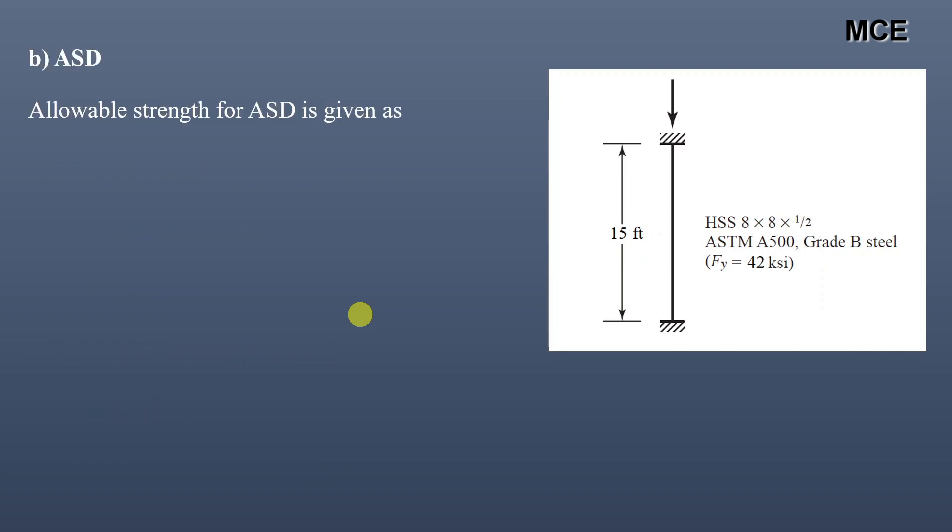For the ASD, allowable strength for ASD is given as nominal strength divided by the safety factor, which is equal to 517.73 divided by 1.67, which is equal to 310.02 kips.